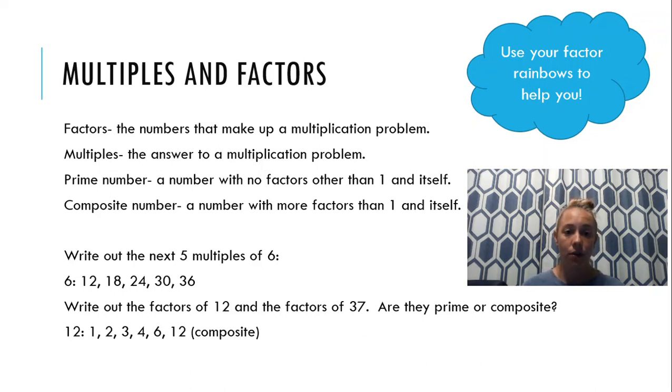Now for 37, there's only one set of factors. That is 1 times 37. That makes 37 a prime number.